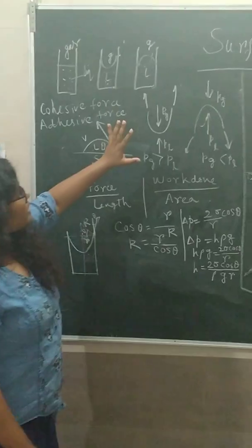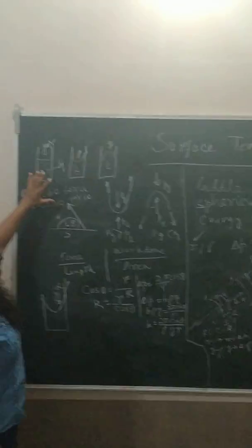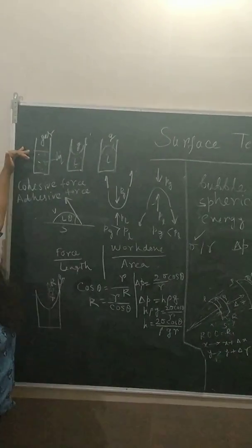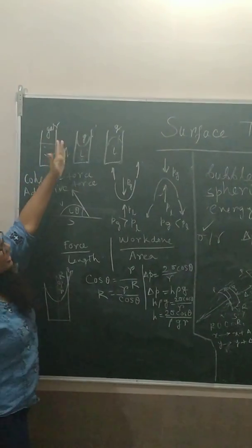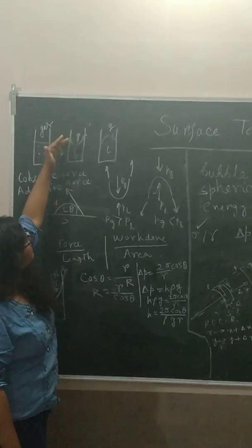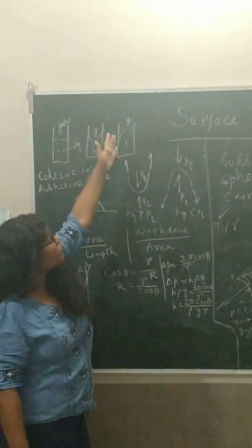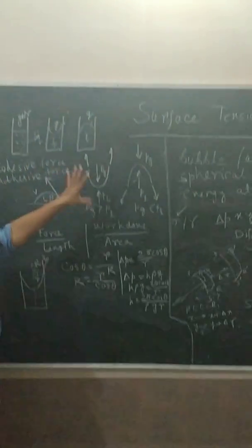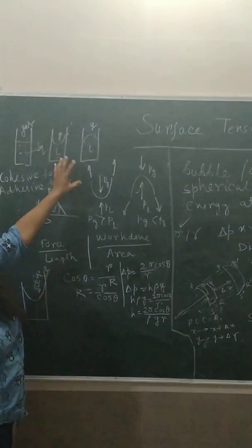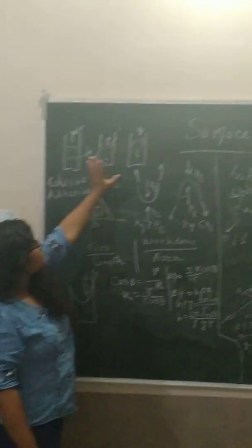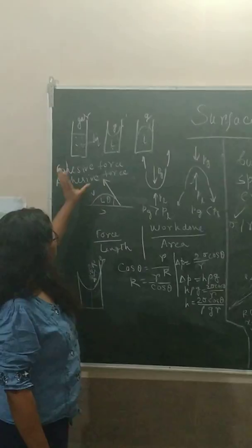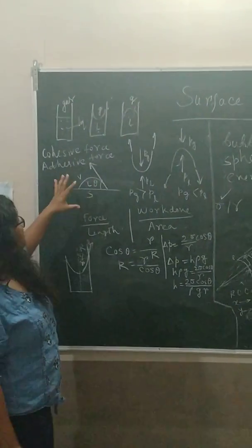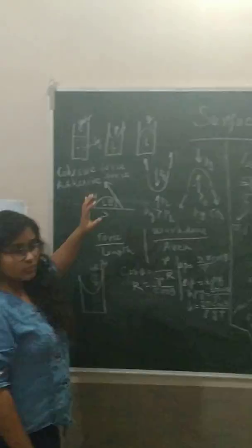We usually notice that whenever there is a container with liquid, at the boundary the surface can be flat, it can be in the shape of a concave meniscus, or the boundary can be in the shape of a convex surface. What is the reason behind this? Some liquids have wetting properties and some liquids don't. Before explaining that, I want to introduce the concept of cohesive force.